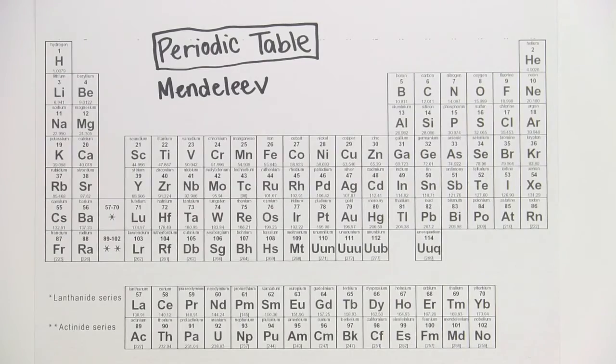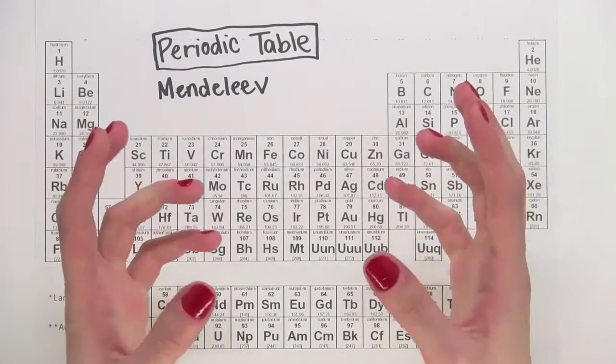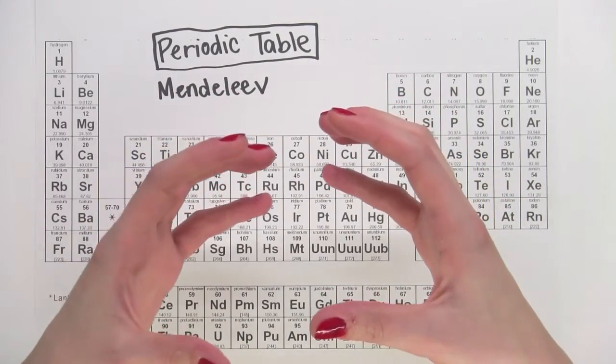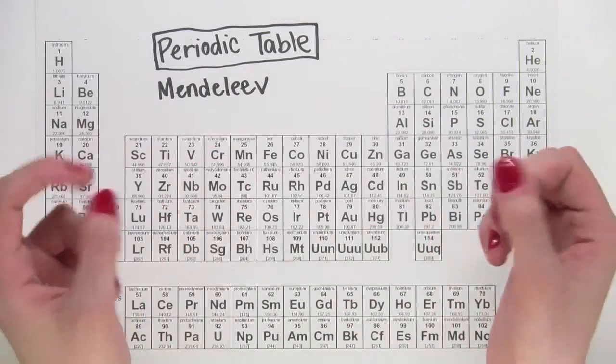Different elements on the periodic table require different numbers of electrons to be happy. Electrons live in the shells surrounding atoms, and when an atom's outermost shell is filled to capacity, the atom is happy.